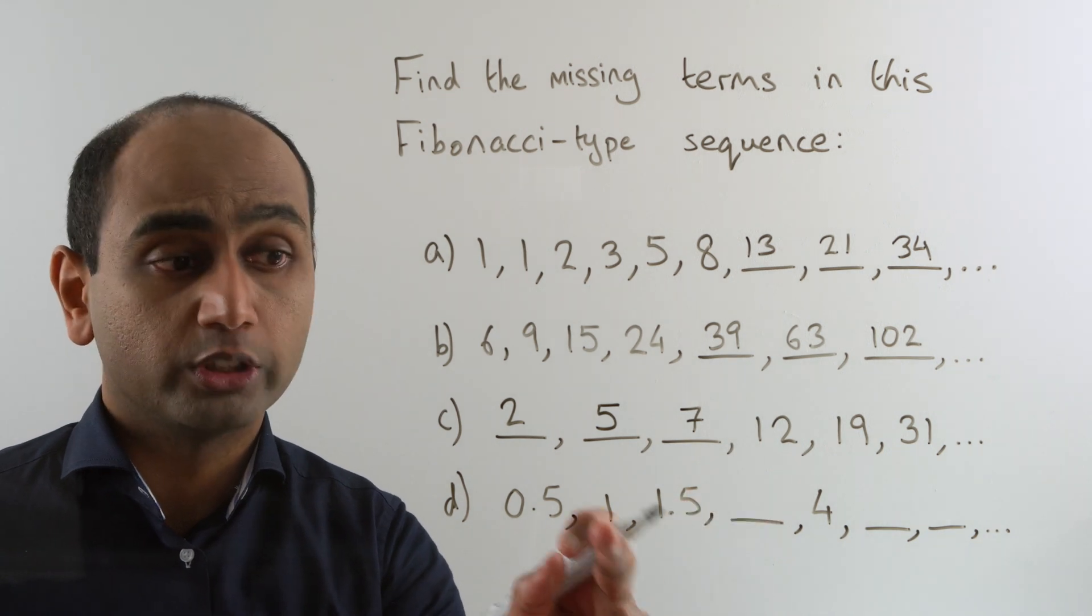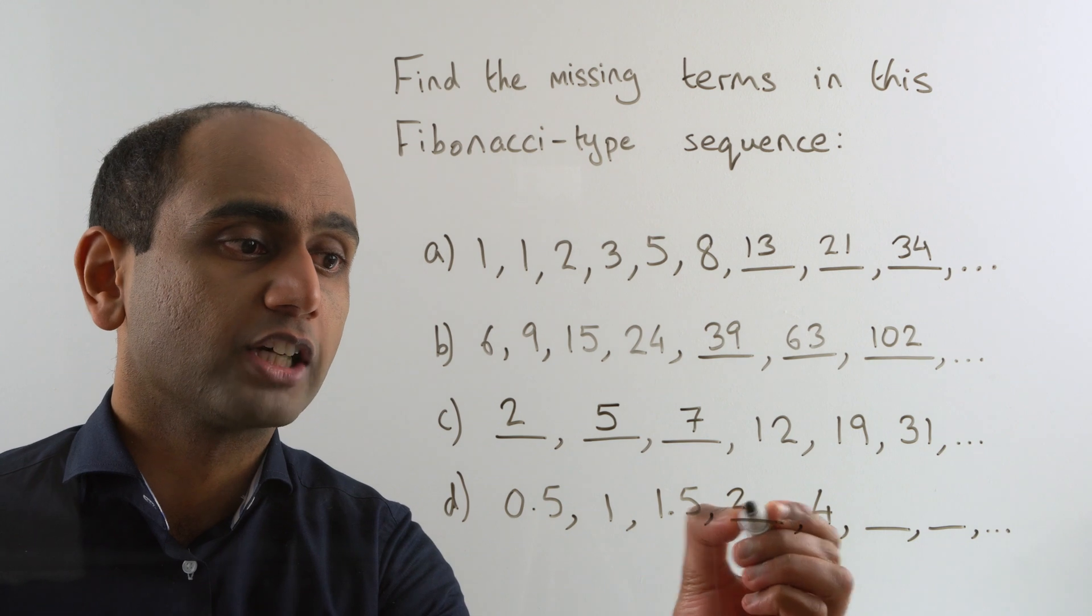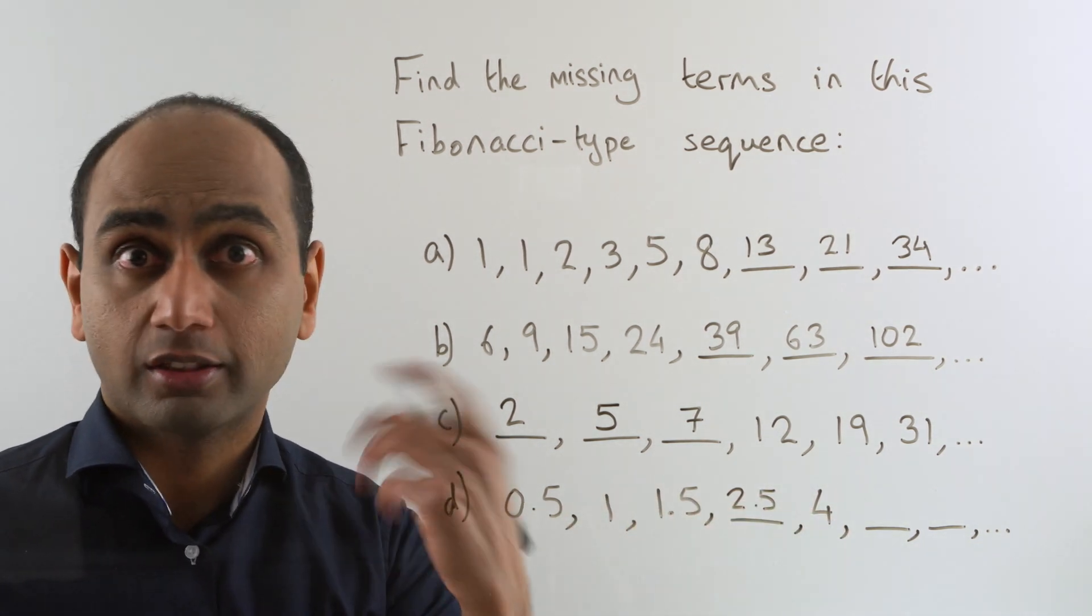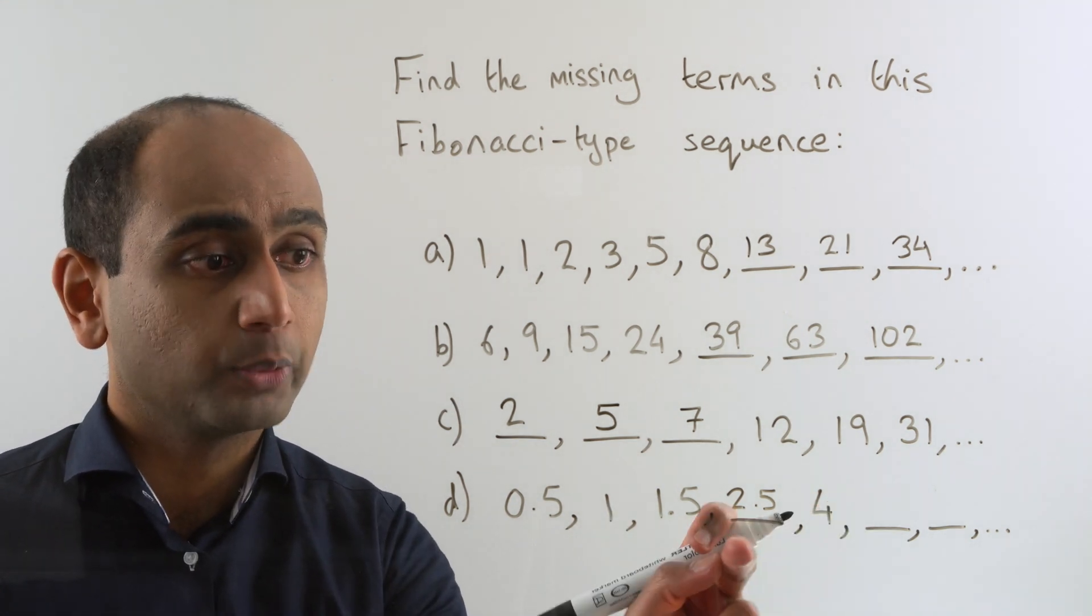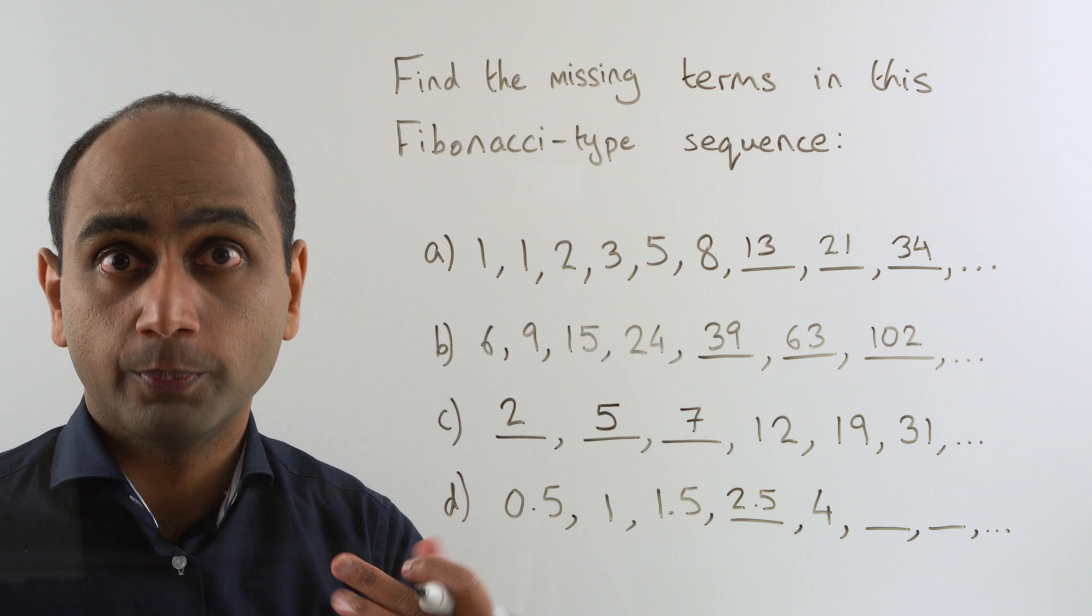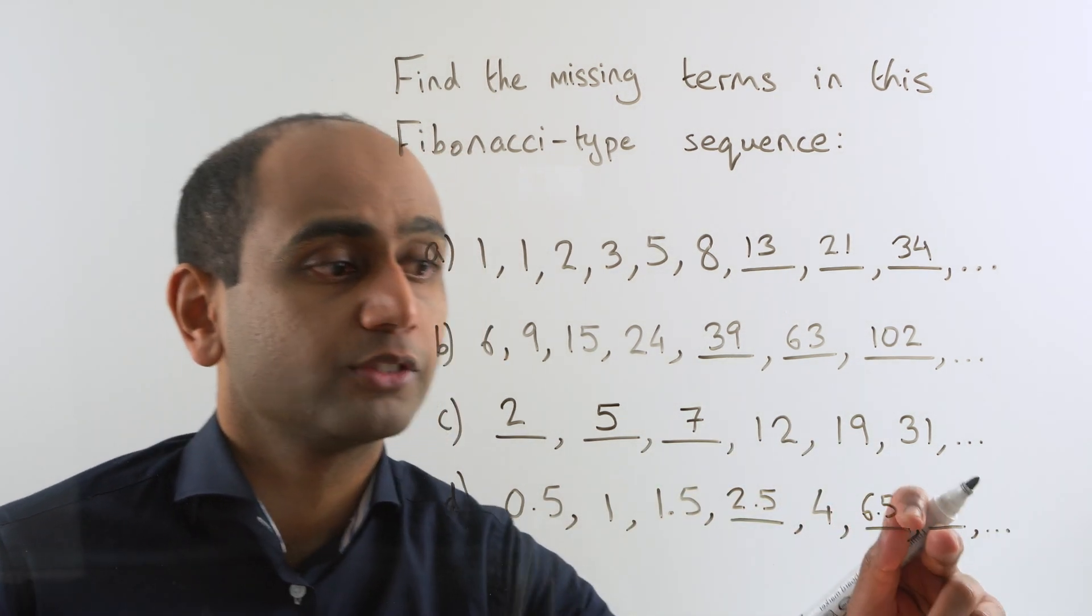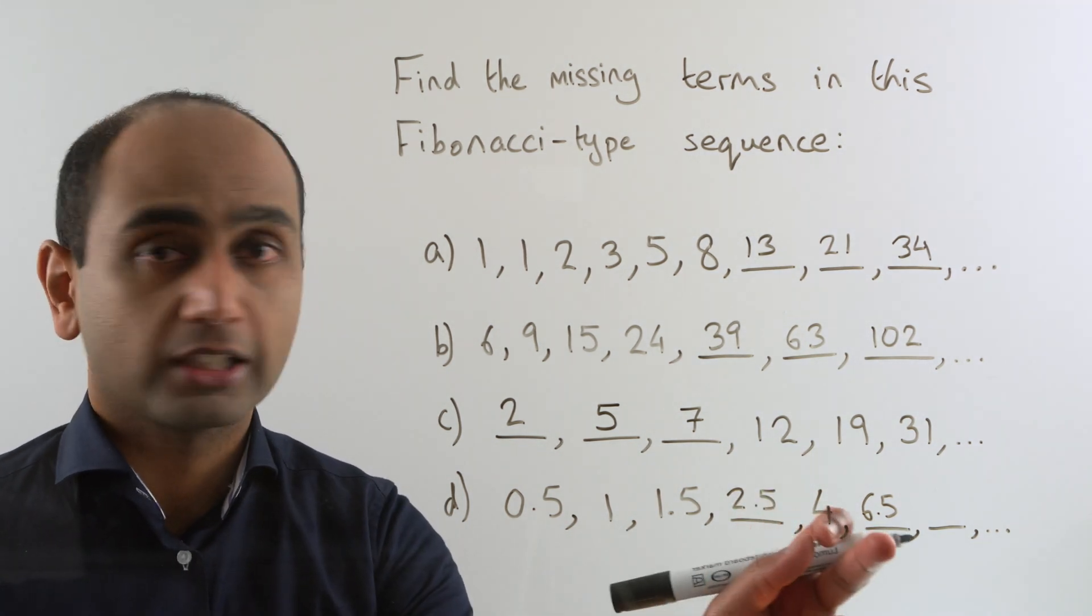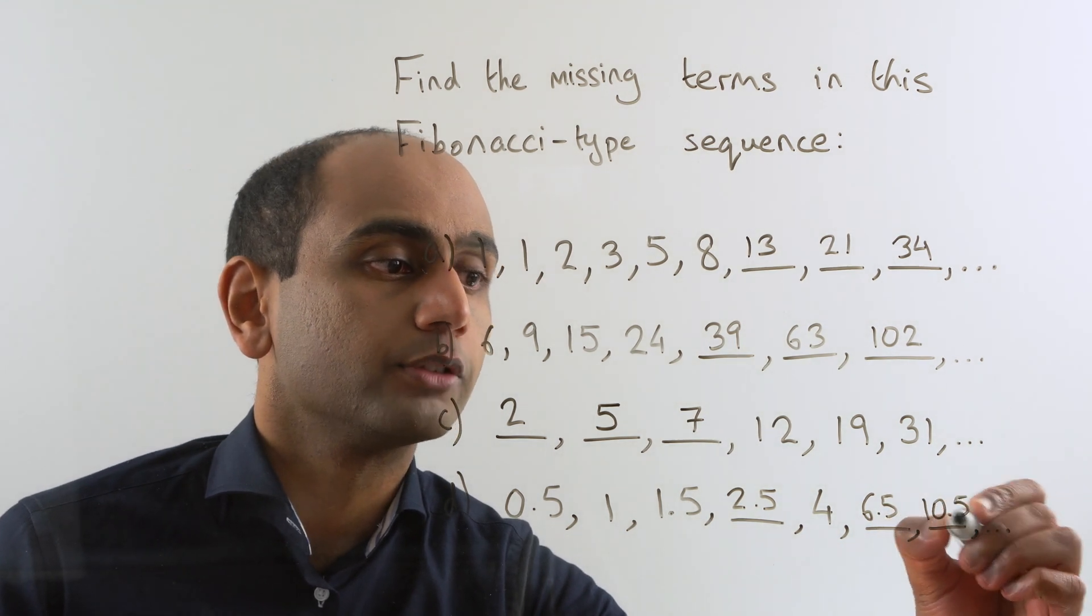To find that missing number there we do 1 plus 1.5 and that would give us 2.5. 1.5 plus 2.5 that gives us 4 which we've been given. To find that number there we need to do 2.5 plus 4 and that gives us 6.5. And to find that last missing number on here we need to do 4 plus 6.5 and that gives us 10.5.